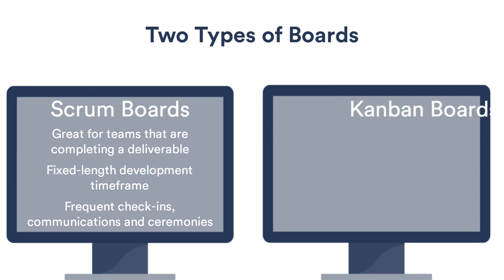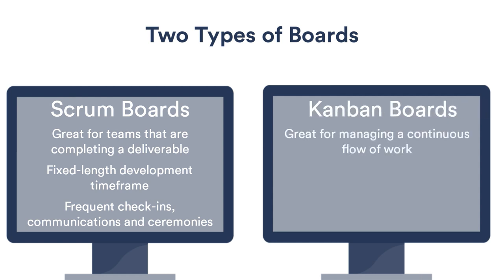Kanban is great for teams whose main objective is managing the flow of work. Think of operations teams or support teams, although it can certainly be used effectively by other teams. It lacks the formal structure of Scrum, so teams need to be effective at working together and managing progress and communication without an imposed structure.